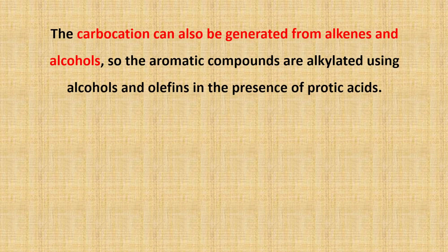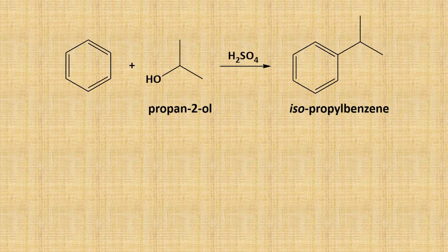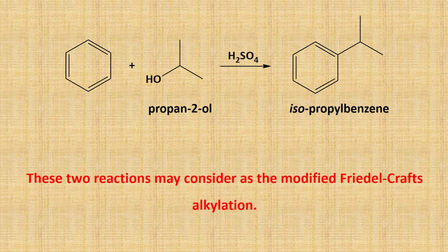Besides alkyl halides, carbocations can also be generated from alkenes and alcohols. So aromatic compounds can be alkylated using alcohols and olefins in the presence of protic acid. Here, benzene is treated with butene, which is an alkene, to give secondary butylbenzene. And if benzene is treated with propan-2-ol, which is an alcohol, in the presence of sulfuric acid, it produces isopropylbenzene. These reactions may be considered as modified Friedel-Crafts alkylation, where alkyl halide is not used.